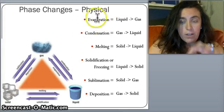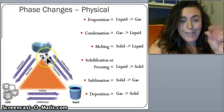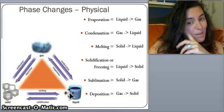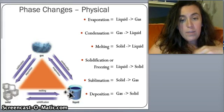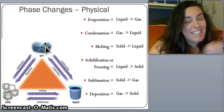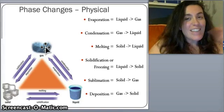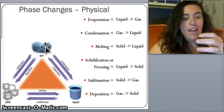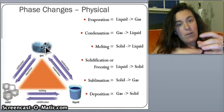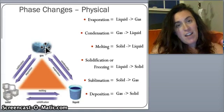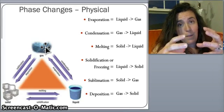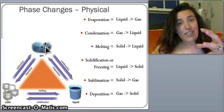Key terminology: evaporation is when you go from a liquid to a gas. Condensation is the opposite — going from gas to liquid. Think about a cold glass of iced tea: the water droplets forming on the outside of the cup — that's condensation. Water molecules from the air drop in temperature and condense onto the outside of the glass.